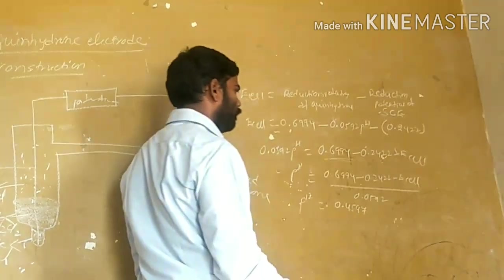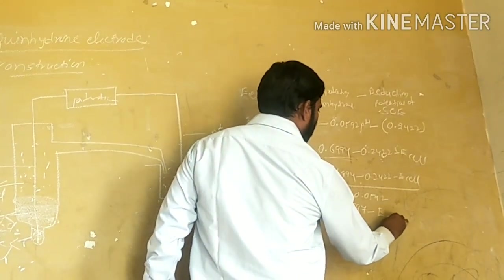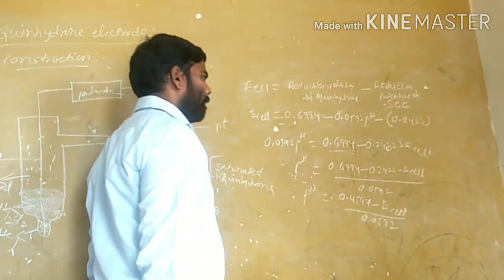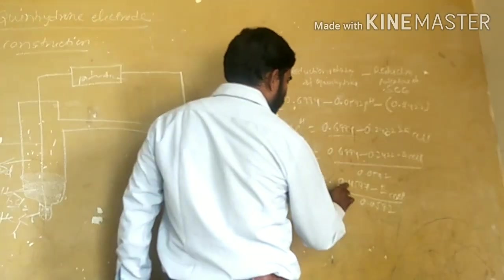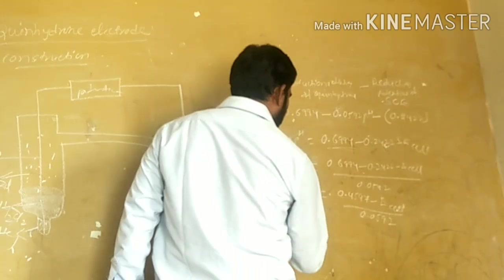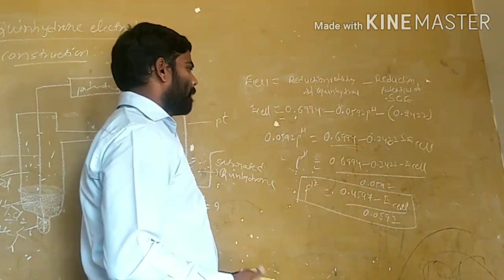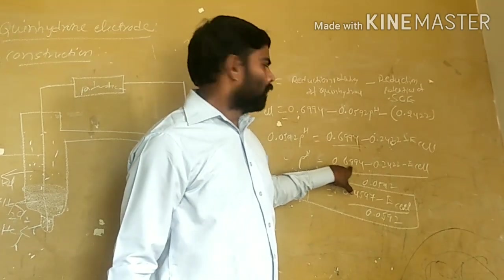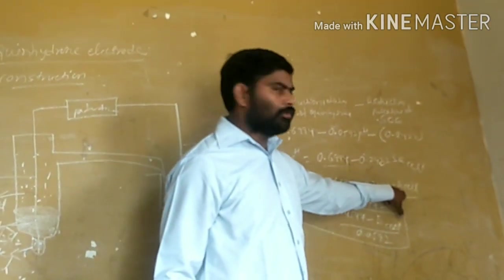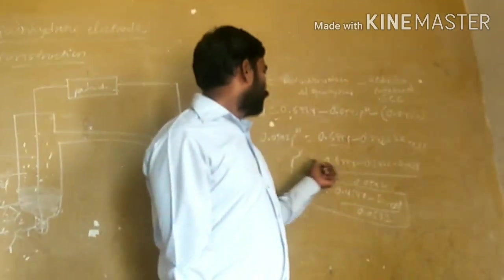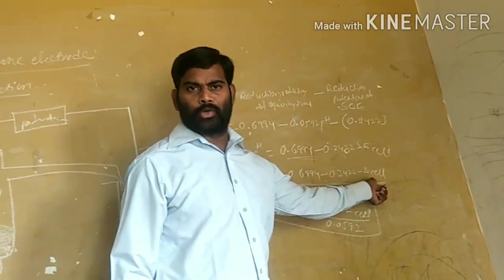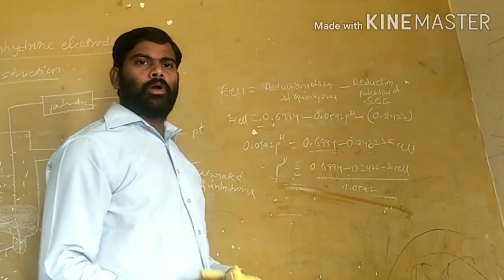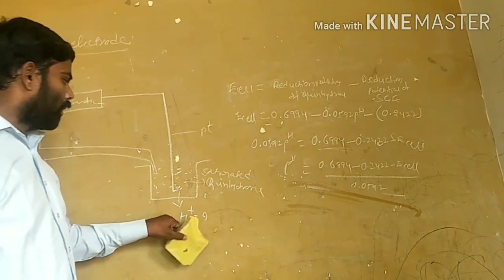The constant values (0.6994 and 0.2422) are known, and E_cell is the potentiometer reading. Once we obtain the potentiometer value, we calculate the pH. Once we know the pH, we can find the concentration of the unknown solution.